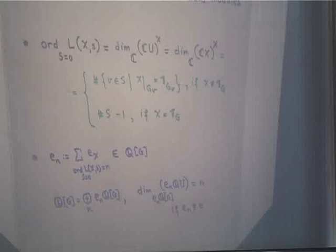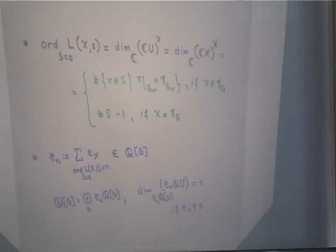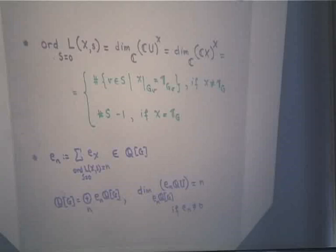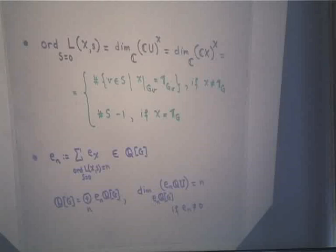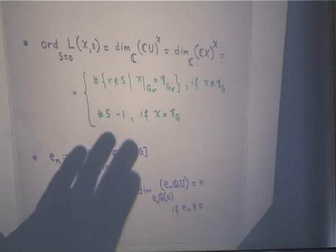This leads to a decomposition of Q[G] into eigenspaces with respect to these orders of vanishing. The eigenspace corresponding to order of vanishing N is E_N · Q[G], and the dimension over E_N · Q[G] of the corresponding eigenspace of QU is precisely N, if the idempotent is nonzero. So at least the order of vanishing of the L-functions is explained in terms of these arithmetic objects U and X.